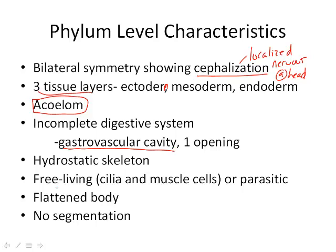It has a hydrostatic skeleton, which just means it's basically pressurized by water in order to keep its shape. They are free-living — moving using cilia and muscle cells — or they can be parasitic. They have a flattened body, which is basically the defining characteristic of this phylum, and they do not have segmentation, so there are no individual segments like you'd see in an earthworm. You can pause and jot those down.